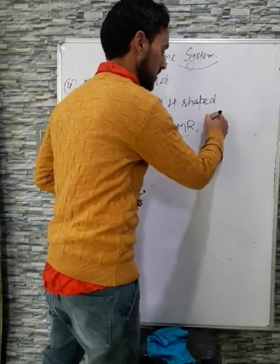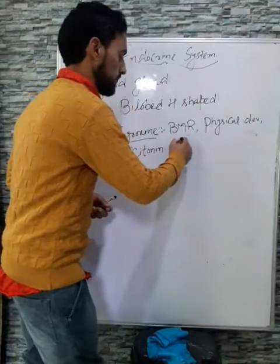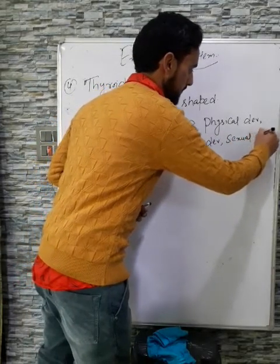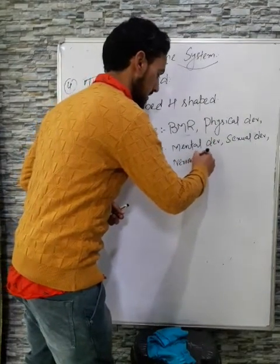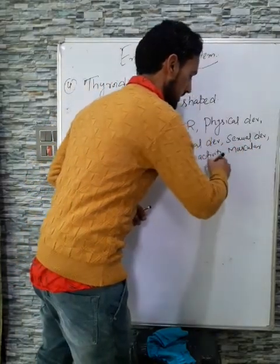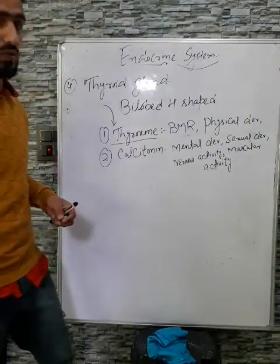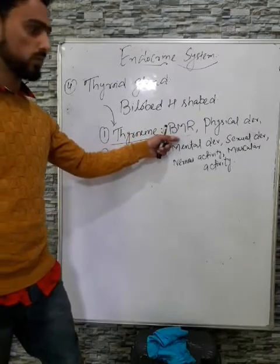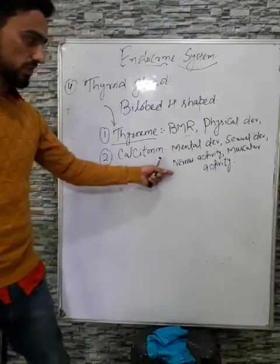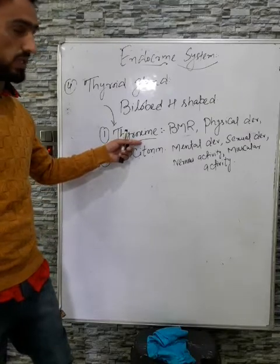Thyroxine also regulates physical development, mental development, sexual development, nervous activity, and muscular activity. So thyroxine controls basal metabolic rate, physical development, mental development, sexual development, nervous activities, and muscular activities in our body.